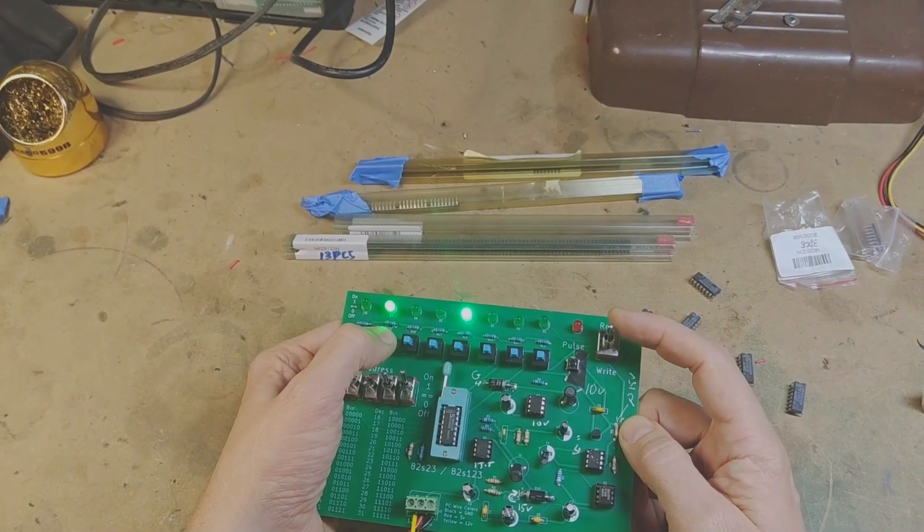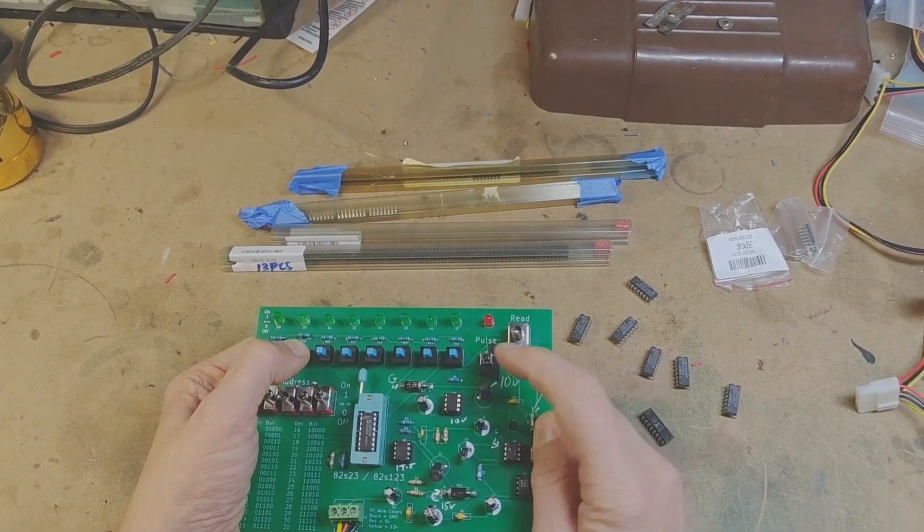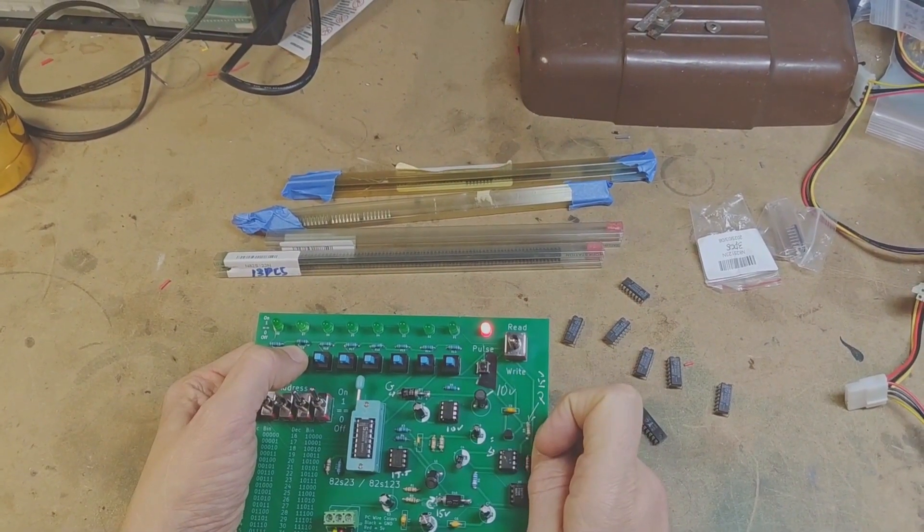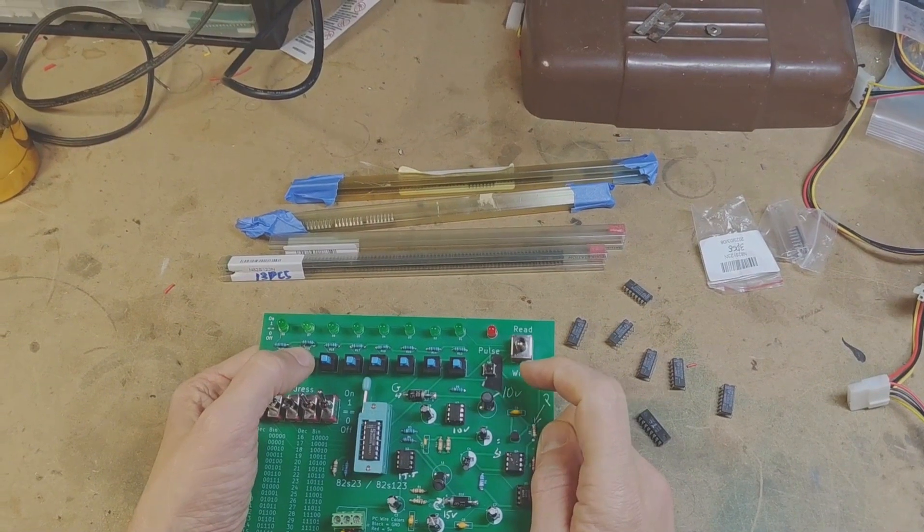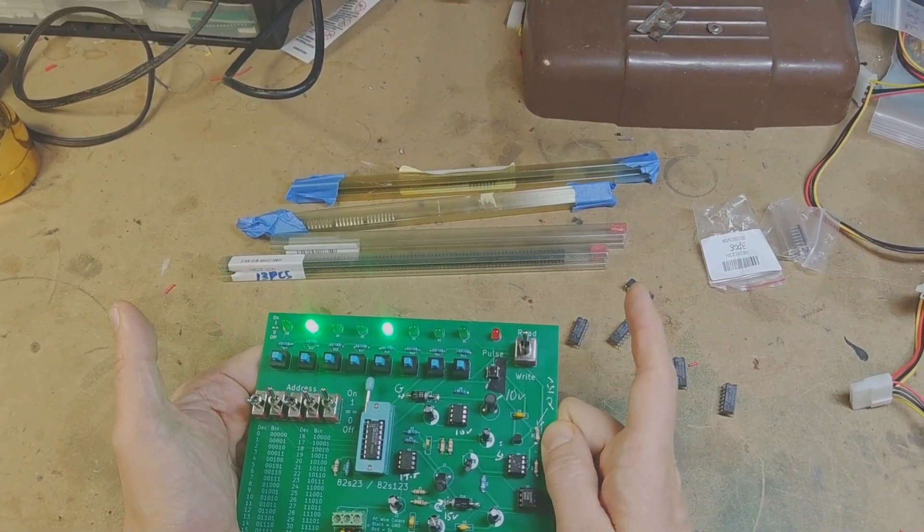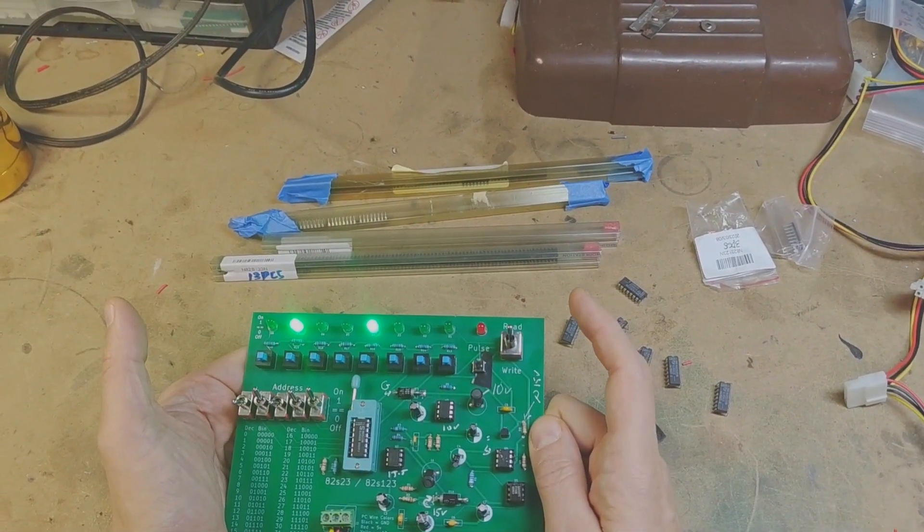I'm gonna hold it down, go into write mode, and press the pulse button, and that'll pulse it for about a second. Take my finger off, go back to read, and now you can see that light's on.